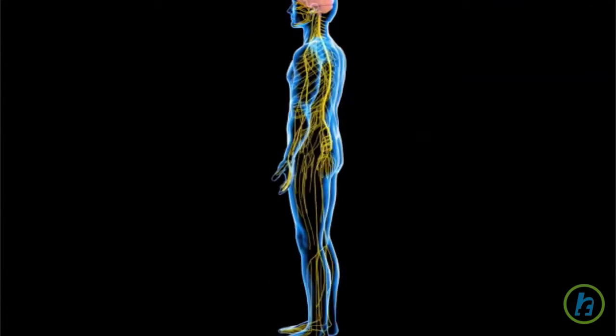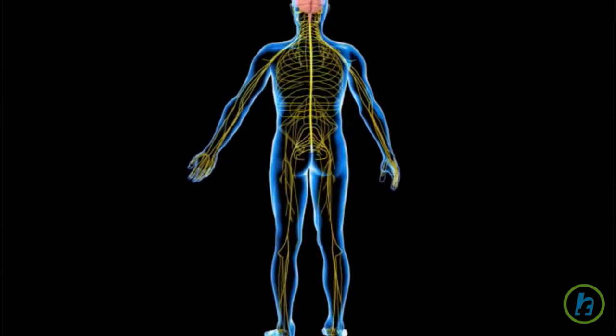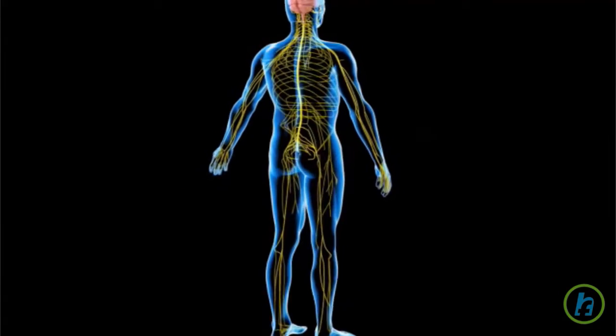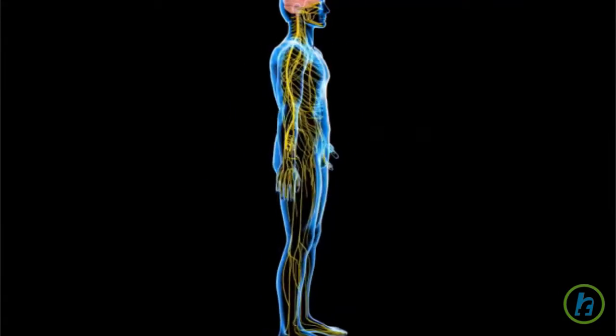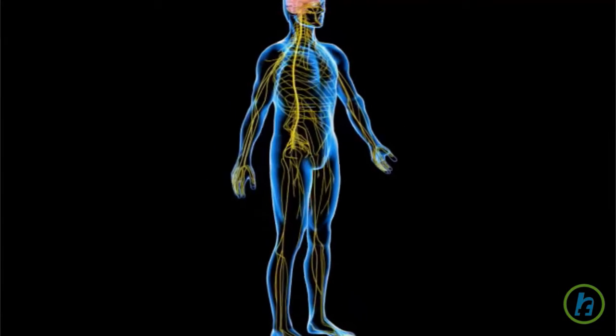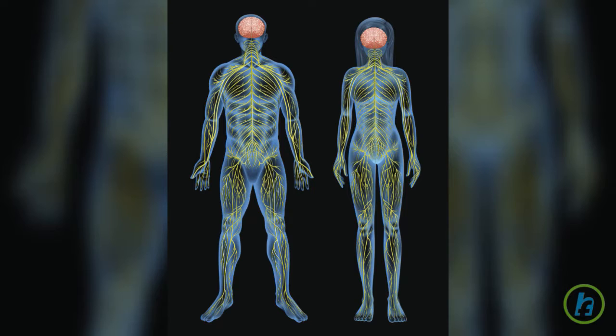The human nervous system consists of a vast network of specialized tissue, including the brain, spinal cord and nerves, which connect and control all the organs in the body.